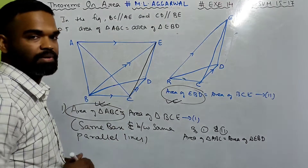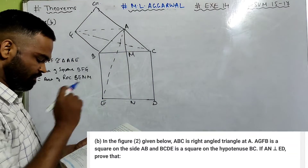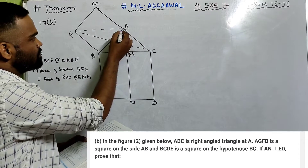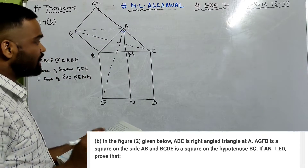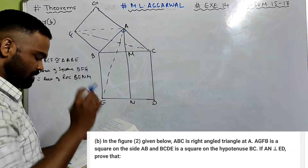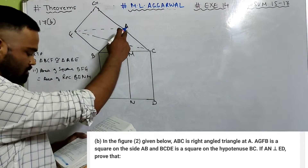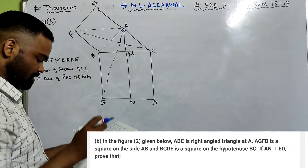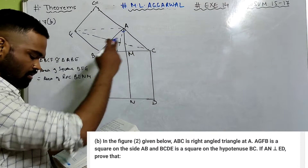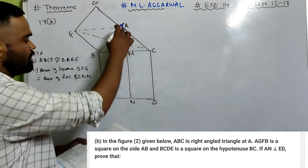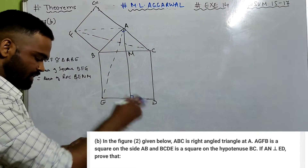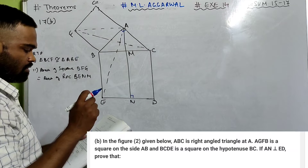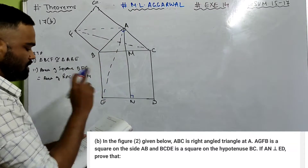Now let us do 17 part B. In the figure, triangle ABC is right-angled at A. AGFB is a square on side AB, and BCDE is a square on the hypotenuse BC. If AN is perpendicular to ED, prove that triangle BCF is congruent to triangle ABE, and that area of square ABFG equals area of rectangle BENM.